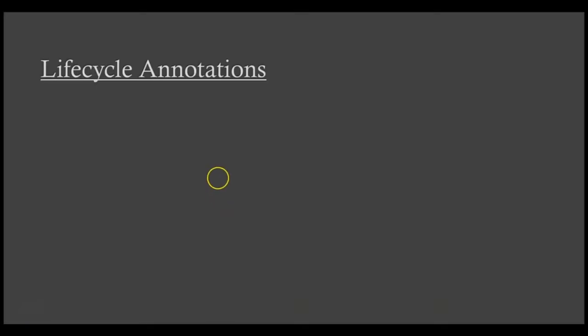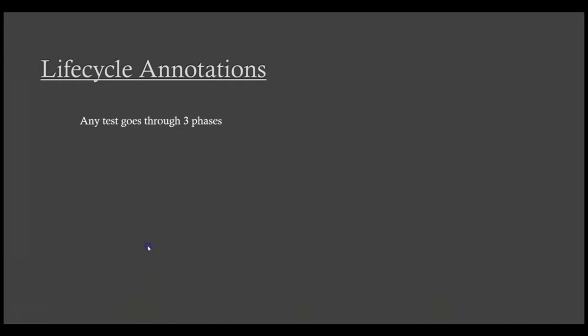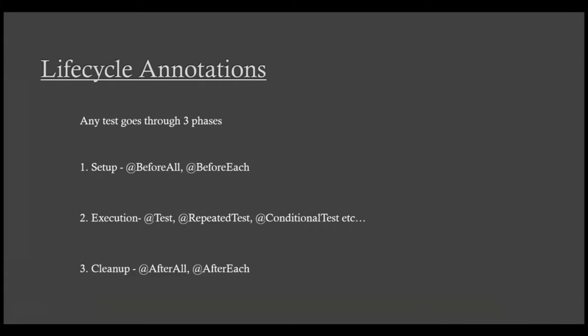Welcome back. In this lecture, we go through some concepts before diving into the code. A test, when it runs, actually goes through some lifecycle phases. Each phase is managed using Java annotations by the JUnit 5 framework. The first phase is called the setup phase, managed by annotations @BeforeAll and @BeforeEach. Typically, actions such as infrastructure setup like creating file or database connections are performed during this phase. The second phase is the execution phase, managed by annotations @Test, @RepeatedTest, @ConditionalTest, and a few more — they actually do the job of running a test case. The last phase is called the cleanup phase, managed by @AfterAll and @AfterEach, where cleanup activities like closing connections are performed.